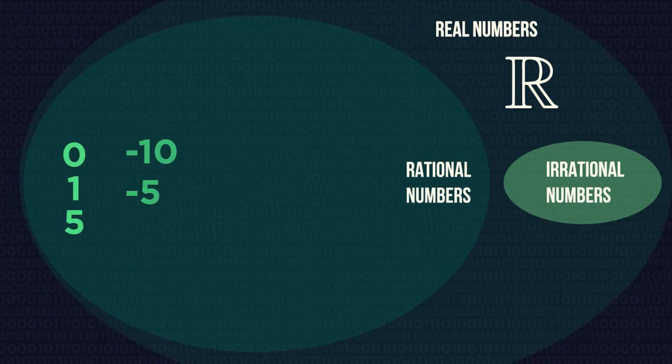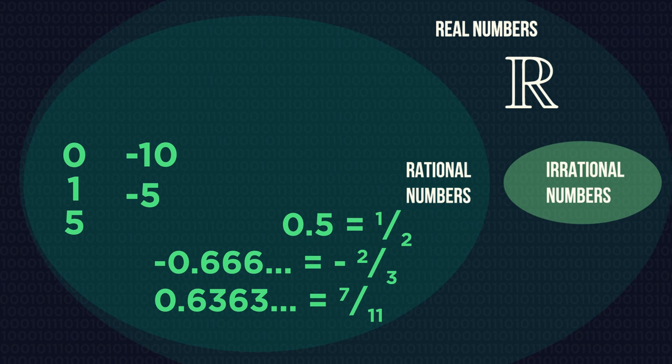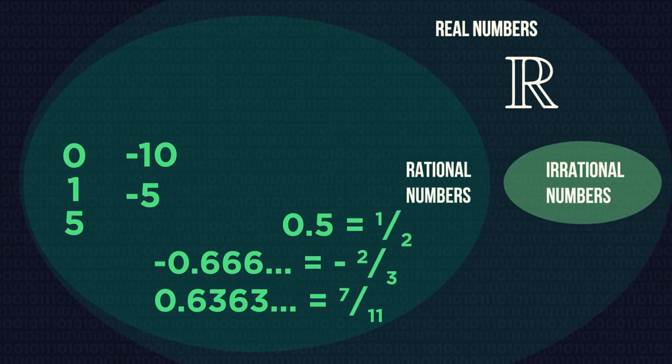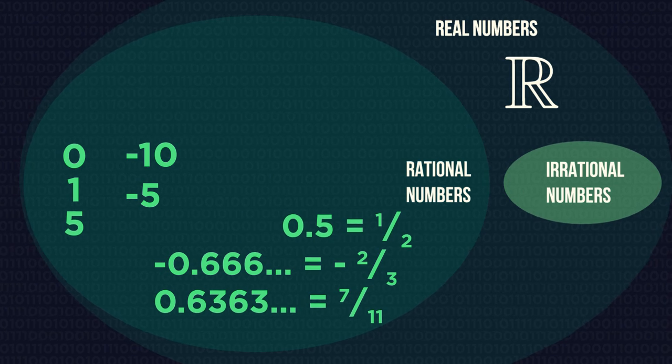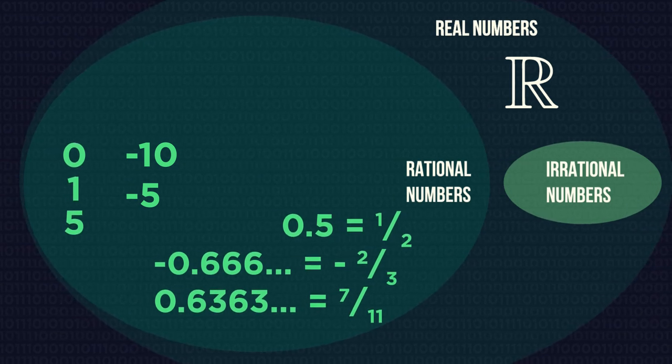So any whole number, terminating decimals, recurring decimals. In fact, all numbers except for non-repeating decimals are rational.